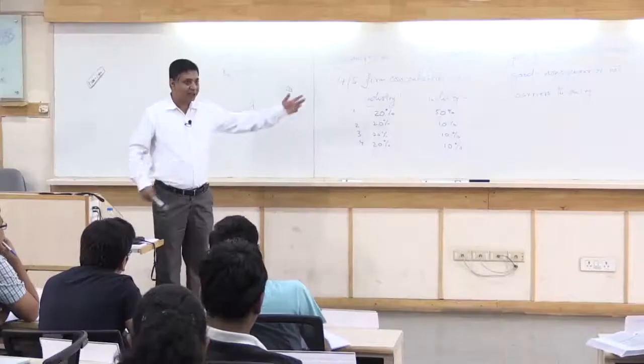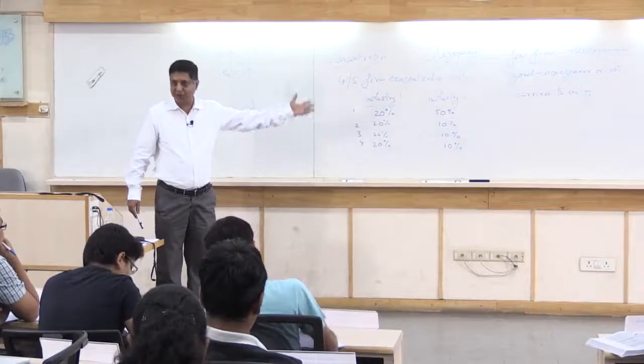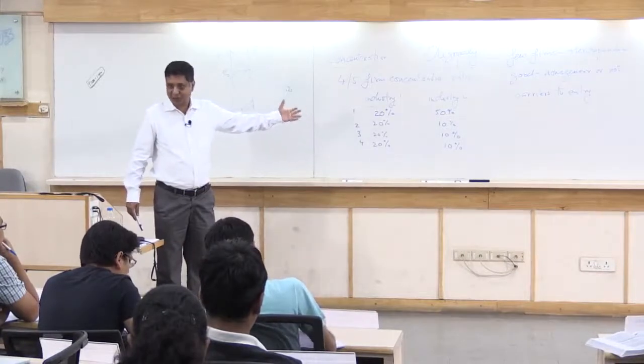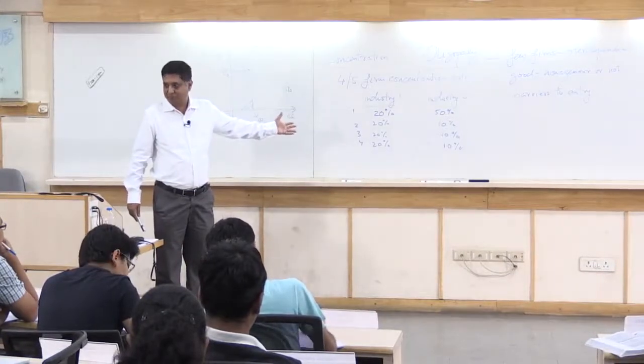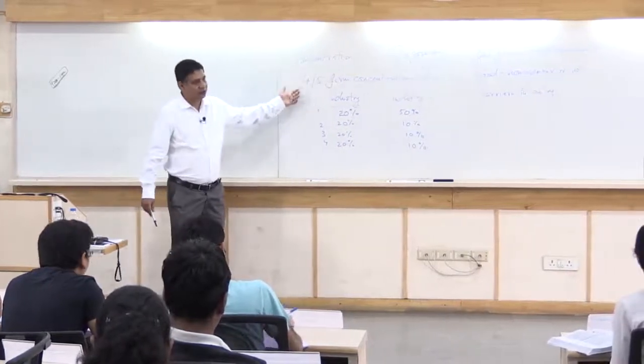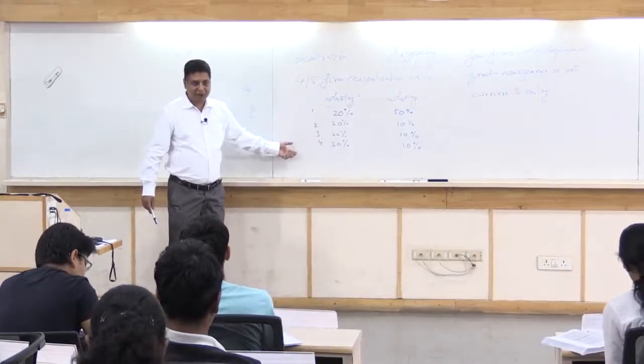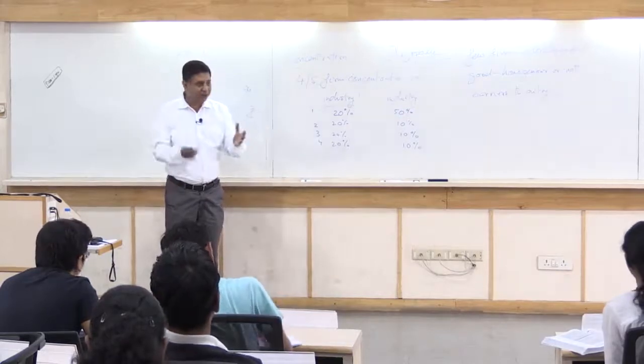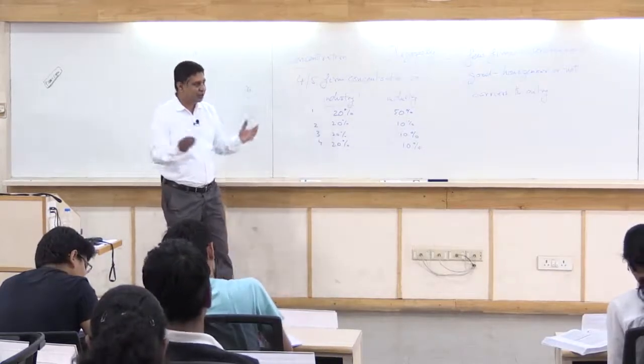And here suppose firm 1 has 50 percent and the other 3 have 10 percent. Which is more concentrated? Industry 2, right? You would say industry 2 is obviously more concentrated than industry 1. But if you do this 4 firm concentration ratio, obviously that difference between the 2 industries will not show up.